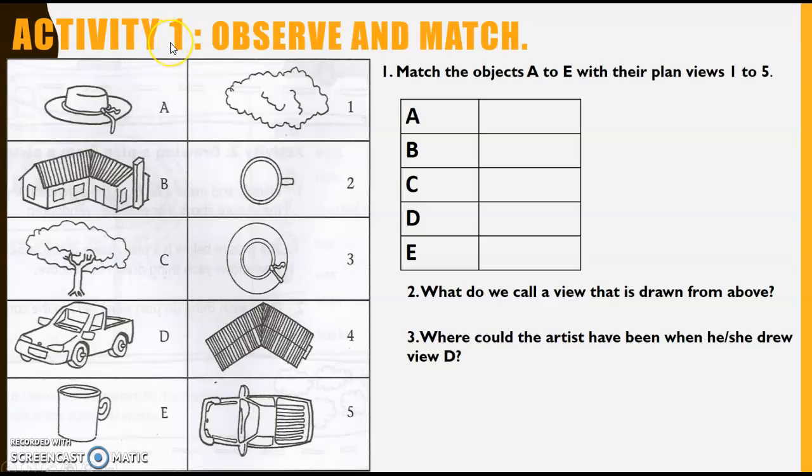Activity one is observe and match. The heading is observe and match. Number one says match the objects A to E, that's A B C D E, with their plan views one to five. And this is their plan views. I've drawn a simple table for you there just to assist you.